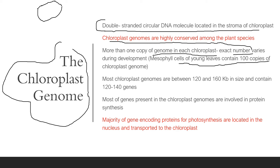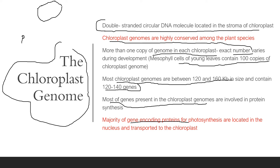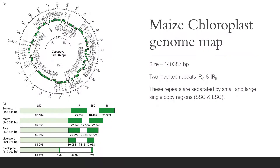Most chloroplast genomes are between 120 to 160 kb in size and contain about 120 to 140 genes. Most of these genes are involved in protein synthesis. Importantly, the majority of gene-encoding proteins for photosynthesis are located in the nucleus. These genes are transported to the chloroplasts for further action.